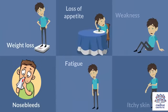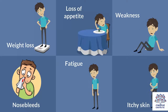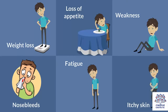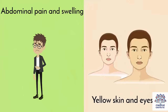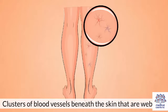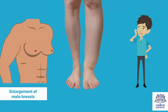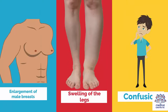Cirrhosis has the following symptoms: 1. Weight loss, 2. Loss of appetite, 3. Weakness, 4. Nosebleeds, 5. Fatigue, 6. Itchy skin, 7. Abdominal pain and swelling, 8. Yellow skin and eyes, 9. Clusters of blood vessels beneath the skin that are web-like, 10. Enlargement of male breasts, 11. Swelling of the legs, 12. Confusion.